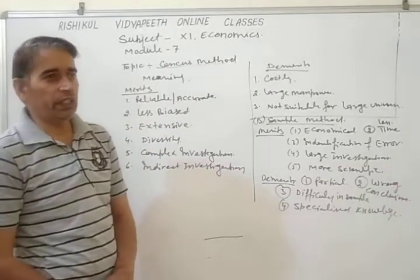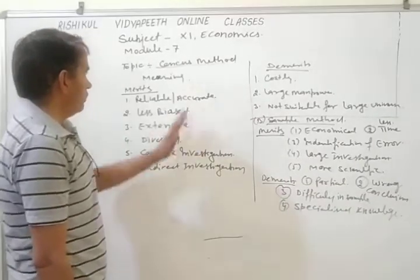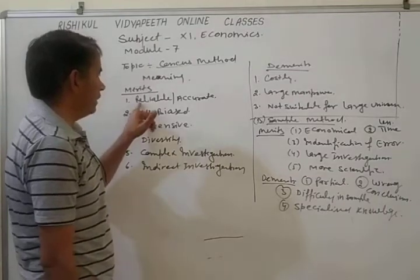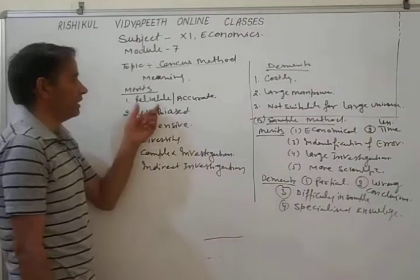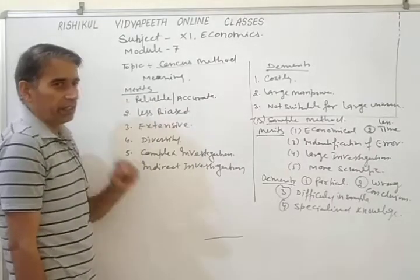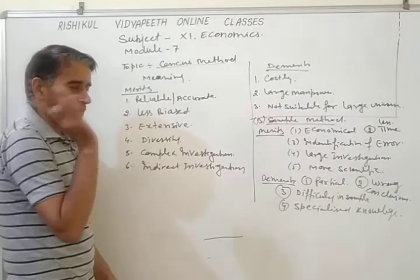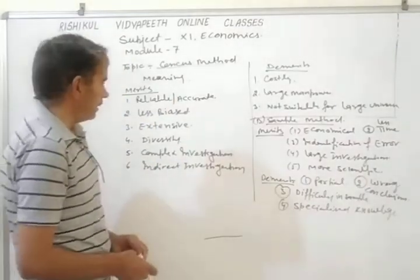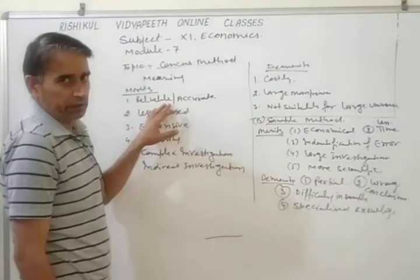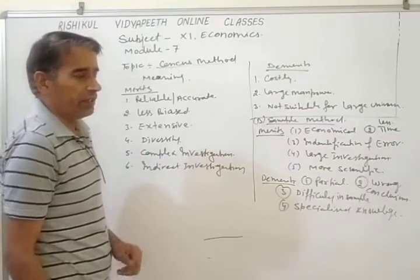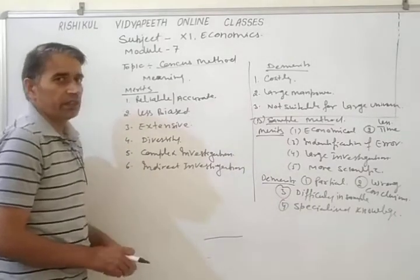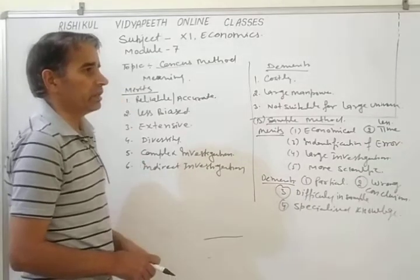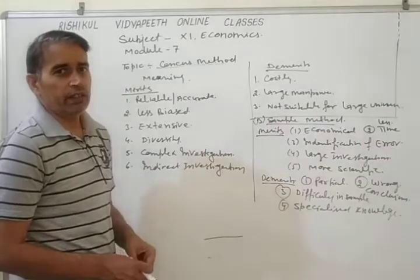Today we discuss the merits and demerits of both methods. First, we discuss the merits of census method. The first merit is that this method is reliable and accurate. Under this method we enumerate each and every item of the universe, so the results are more accurate. When results are more accurate, the method is reliable. So under this method, the reliability and accuracy of results is more than in comparison to the sample method.